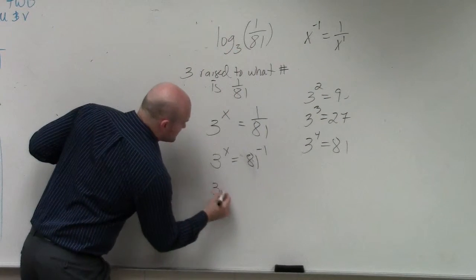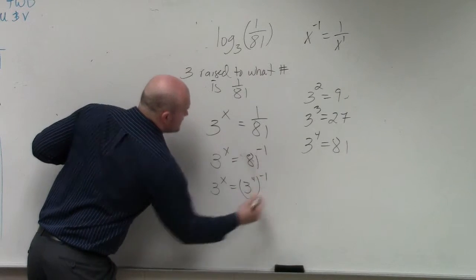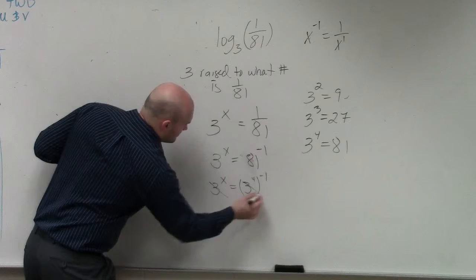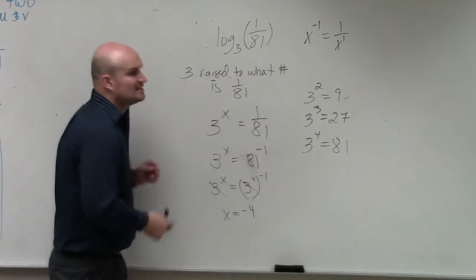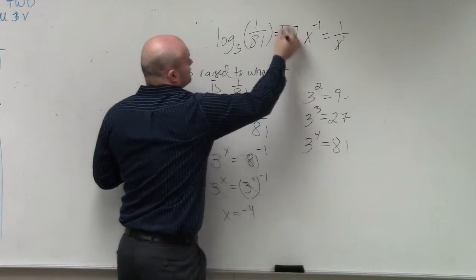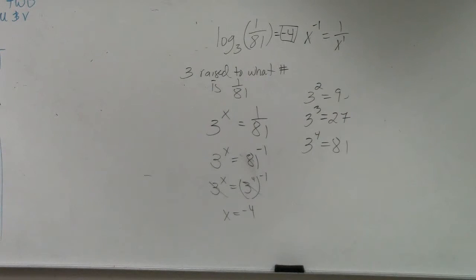So therefore, I can rewrite this as 3 to the x equals 3 to the fourth power raised to the negative first power. Then, one-to-one property, x equals negative 4. So the value is negative 4. Done. So the main important thing when you're solving these, or at least finding the answers...